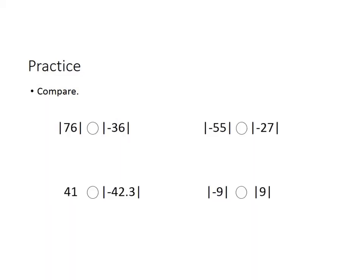Let's do some comparison between absolute values. We need to actually look very carefully at what the actual value is. The absolute value of 76 is 76, and the absolute value of −36 is 36. When we look at it that way, we can see that 76 is greater than 36. The absolute value of −55 is 55, and the absolute value of −27 is 27, so the absolute value of −55 is greater than the absolute value of −27.